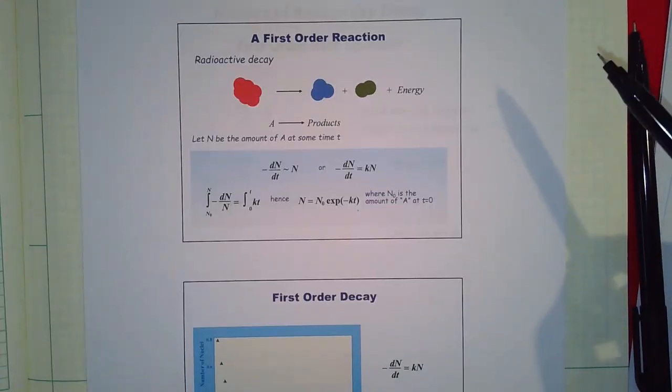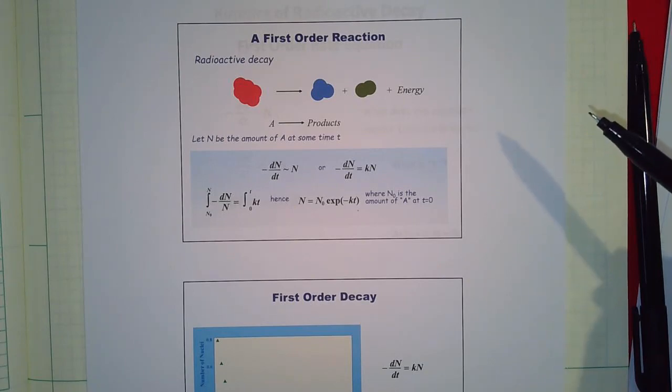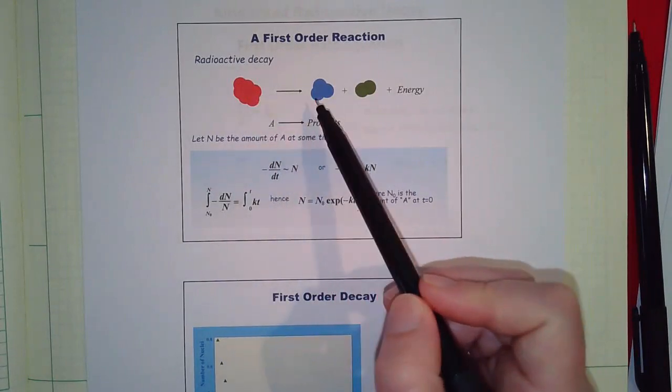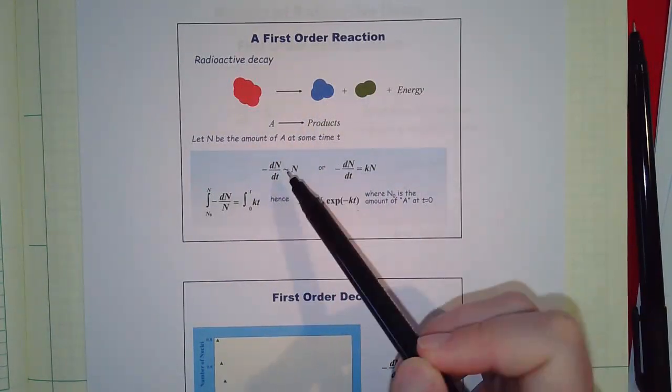Hello, in this video I'm going to go over first-order reaction kinetics. The classic example is radioactive decay where you have an atom and it breaks down into products and releases energy.